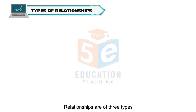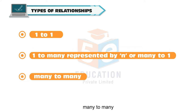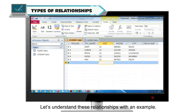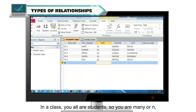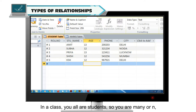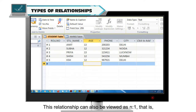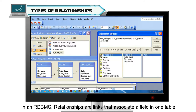Relationships are of three types: one to one, one to many (represented by N), or many to one, and many to many. In a class, you all are students, so you are many or N, and your computer teacher is one. The relationship between you all and your teacher is one to N or one to many. This relationship can also be viewed as N to one, that is many students related to one teacher.